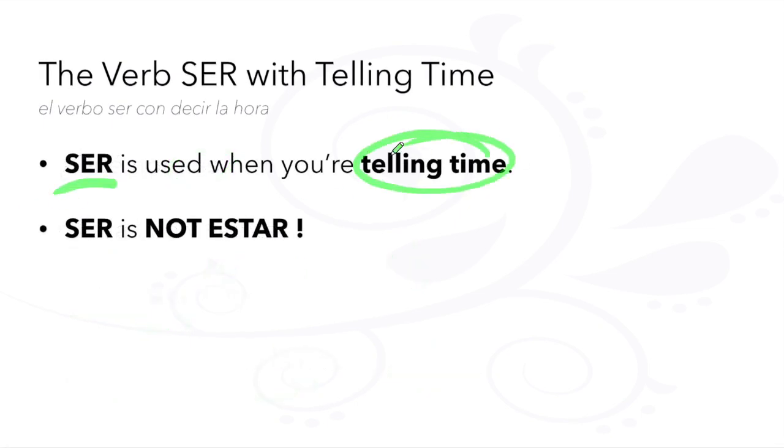Don't forget that we use the verb ser to tell time. Both ser and estar mean 'to be,' but we cannot use estar for telling time.